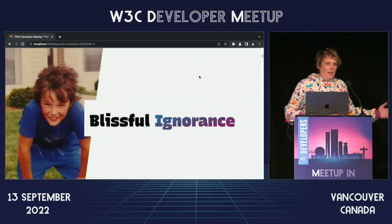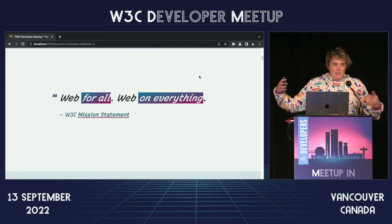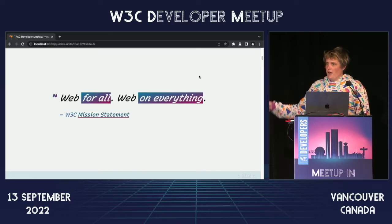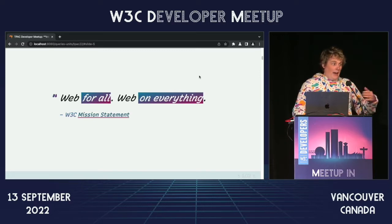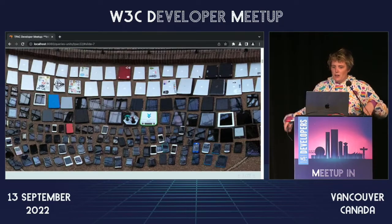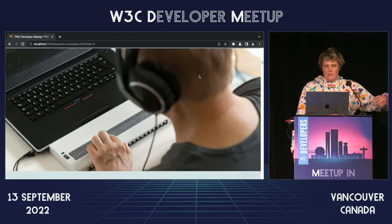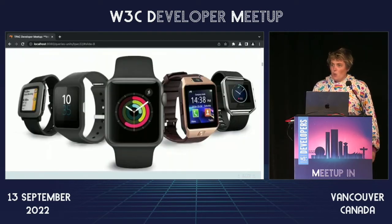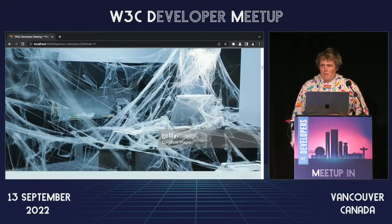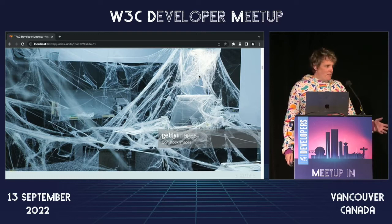It became the mission statement of this organization: web for all, web on everything. And everything is a lot of things. That includes your latest 4K monitor and this whole list of mobile devices, assistive technology, smart watches, and all sorts of non-visual media. The web is just getting on everything. It's everywhere. It's a mess and it's kind of sticky.